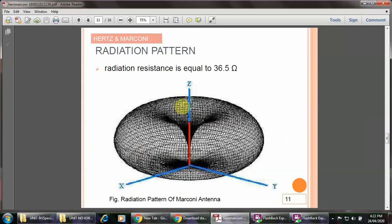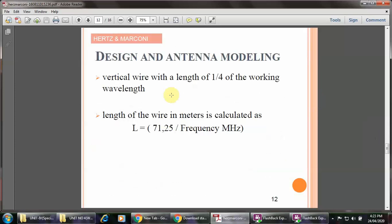The radiation pattern of the Marconi antenna is shown in the figure, with a radiation resistance of 36.5 ohms. The Marconi antenna length is calculated as 71.5 divided by the frequency in megahertz.